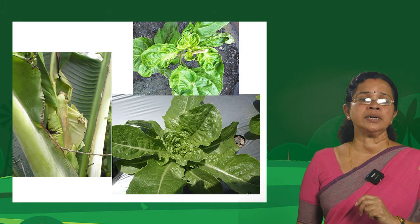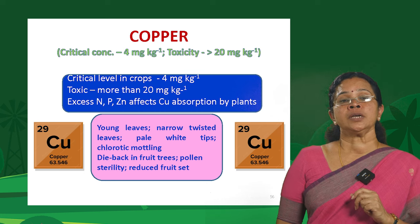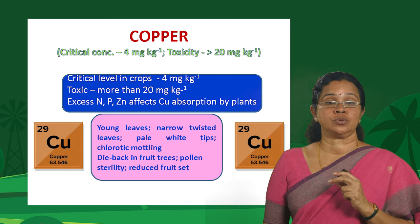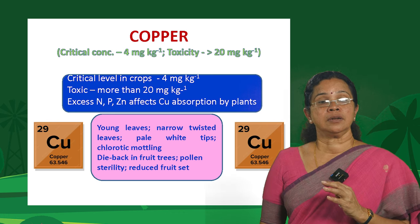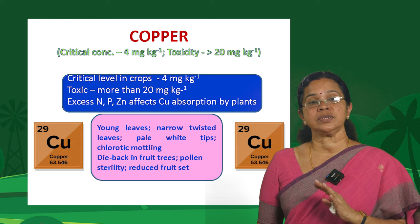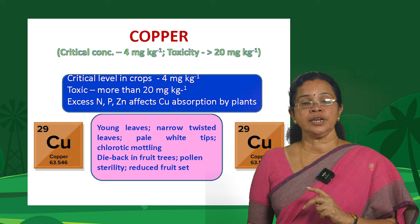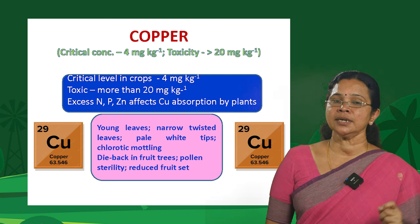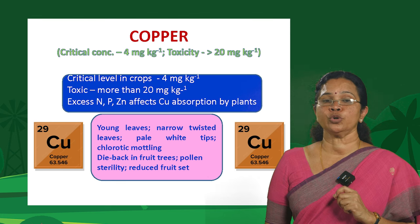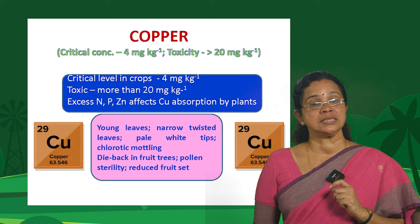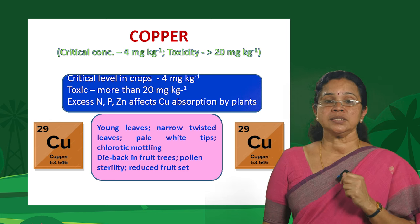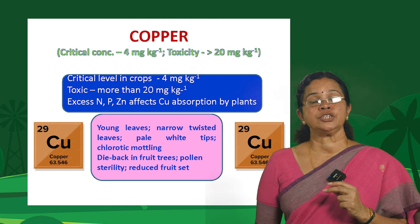Coming to copper — it has a very definite role in reproduction of plants and in the quality of fruits. Excess nitrogen, phosphorus and zinc affect copper absorption by plants — so there is an antagonism between nitrogen, phosphorus, zinc and copper. Copper is an immobile element, so deficiency is first seen in younger leaves. The leaves become twisted and narrow, with pale white tips and chlorotic mottling. In fruit trees, a typical symptom is dieback — branches die from the tip downwards — along with pollen sterility and reduced fruit set.